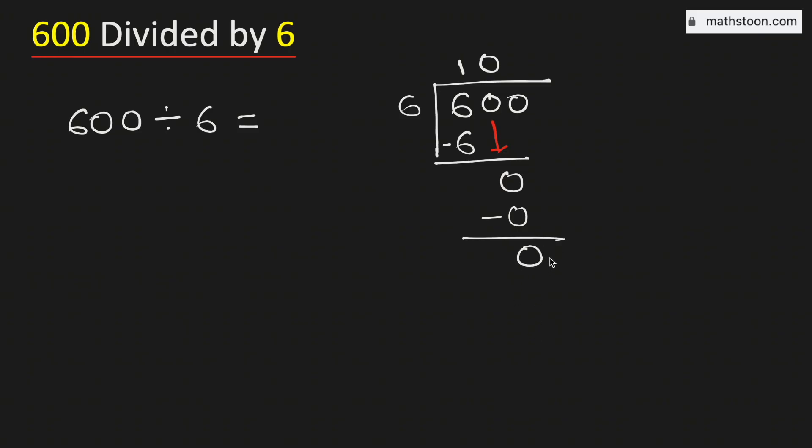Again using the same way, we will bring down this number 0 here. And we know that this is the number 0, so we remove this 0 again. And we know that 6 times 0 is 0, subtract we get 0.